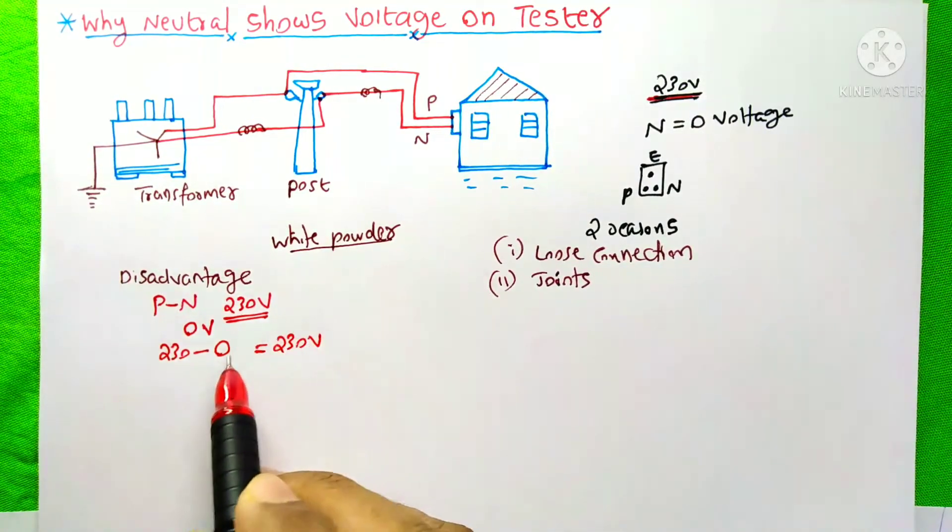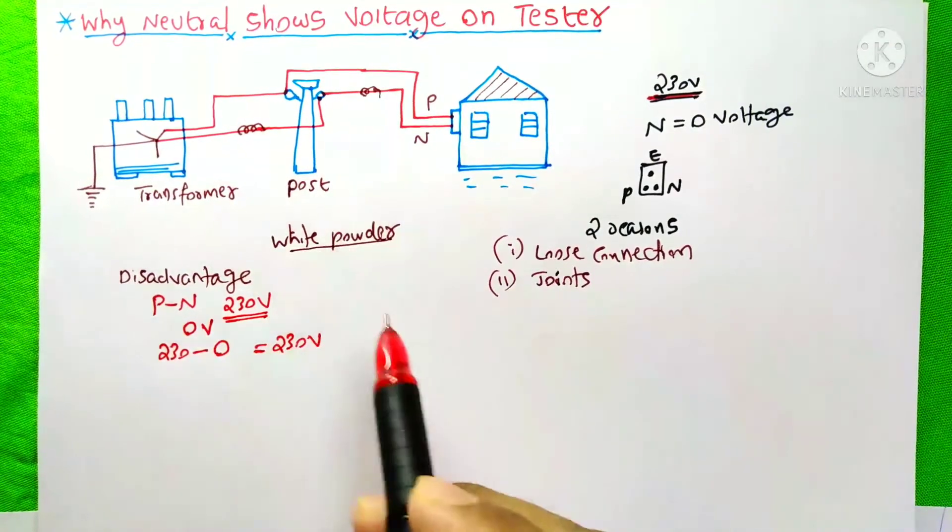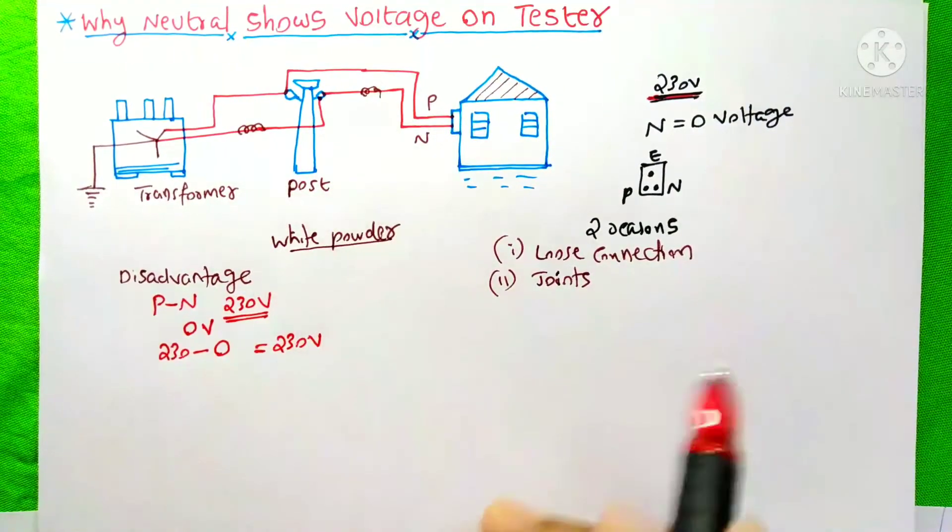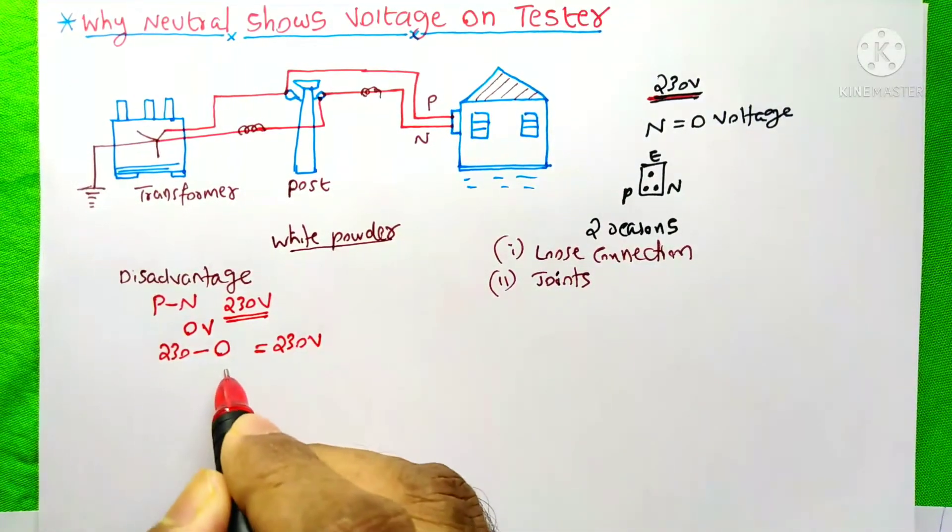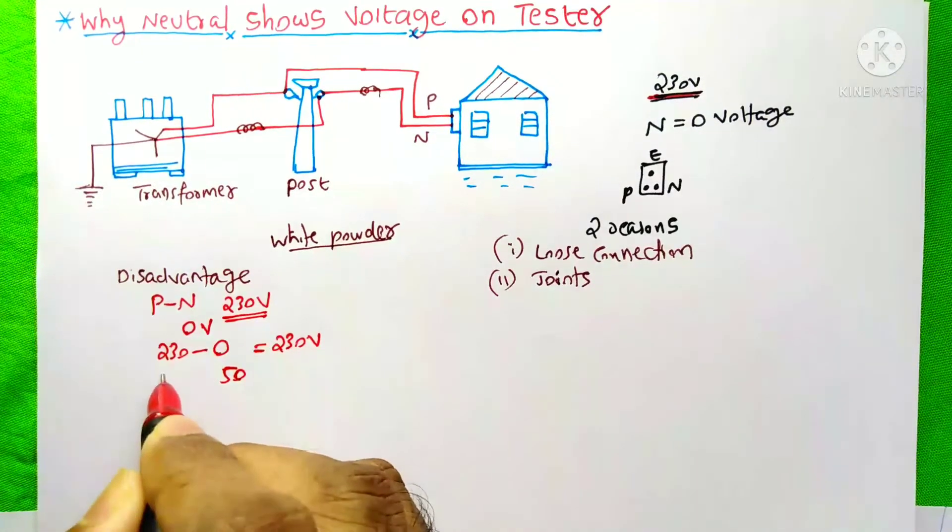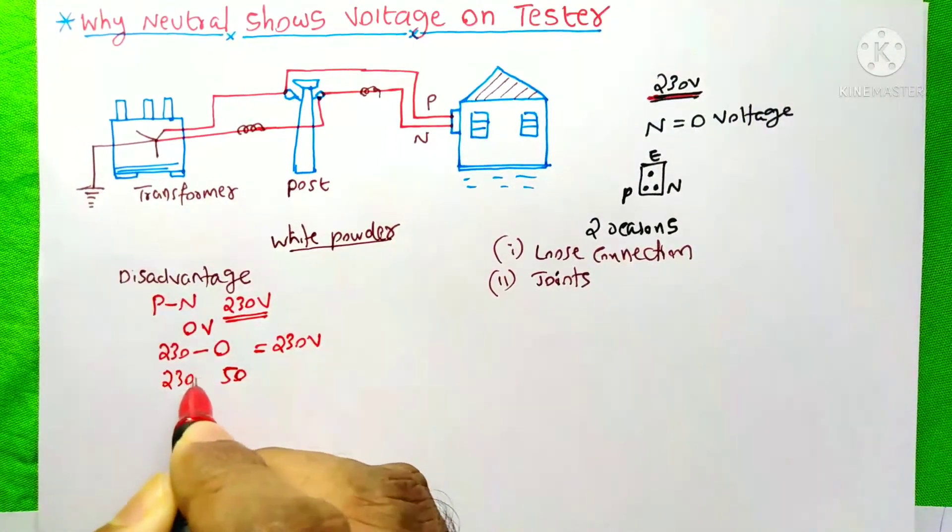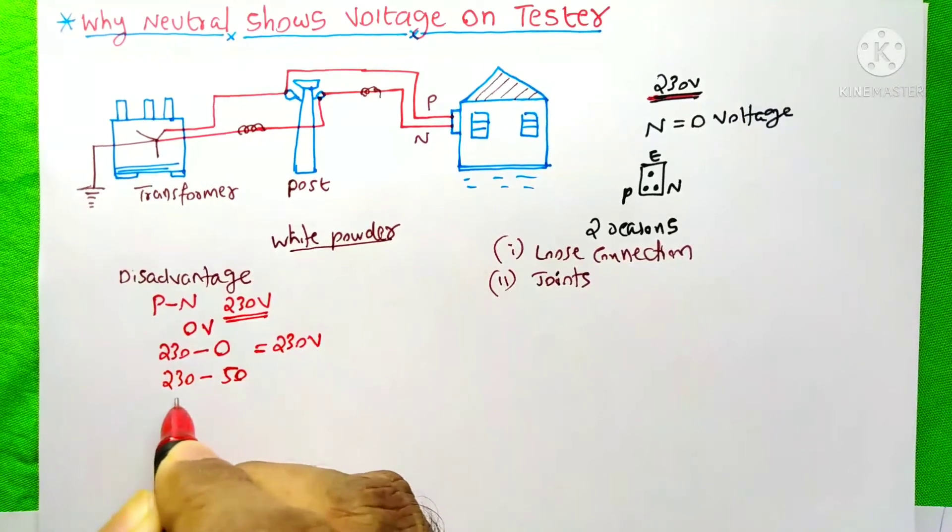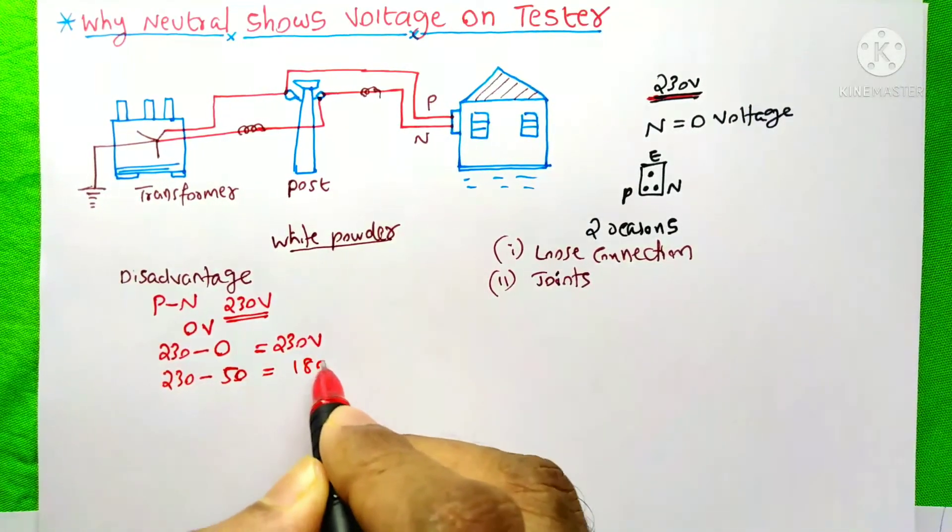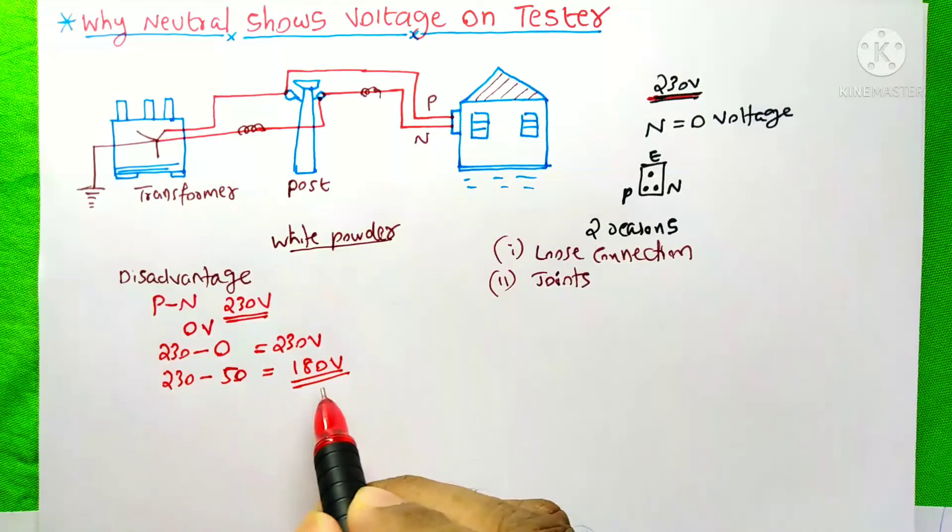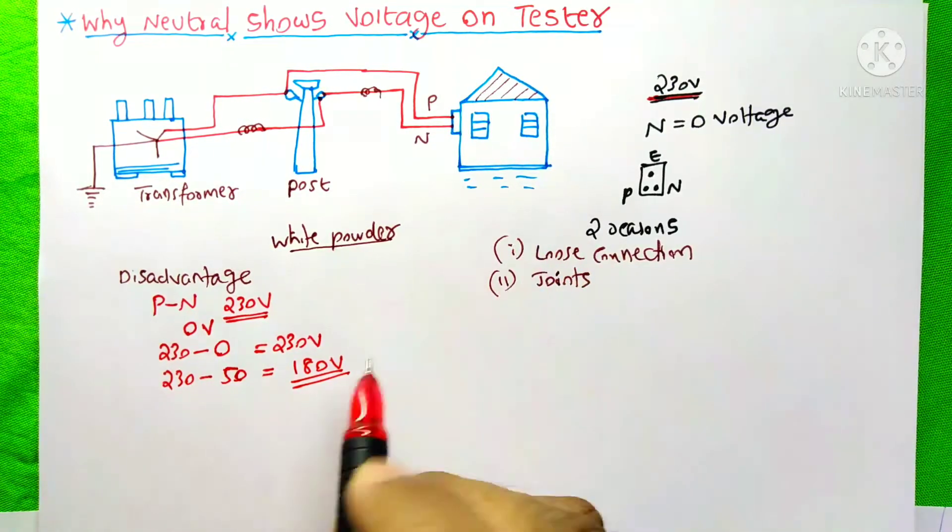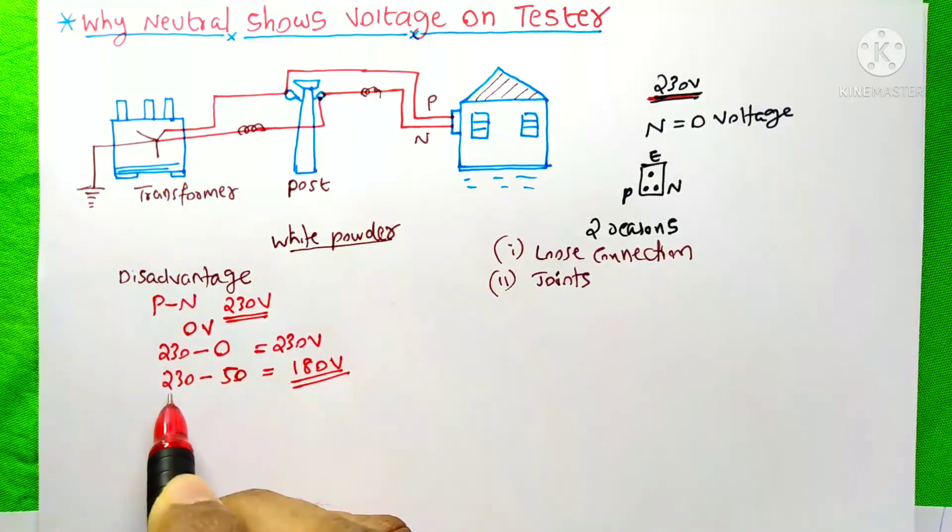OK. So, it is the normal case. In this situation, your neutral is showing some voltage, let's say it is 50V. So, I am subtracting this voltage from the main 230V. So, the answer will be 180V. That means your home appliances are not getting the 230V.